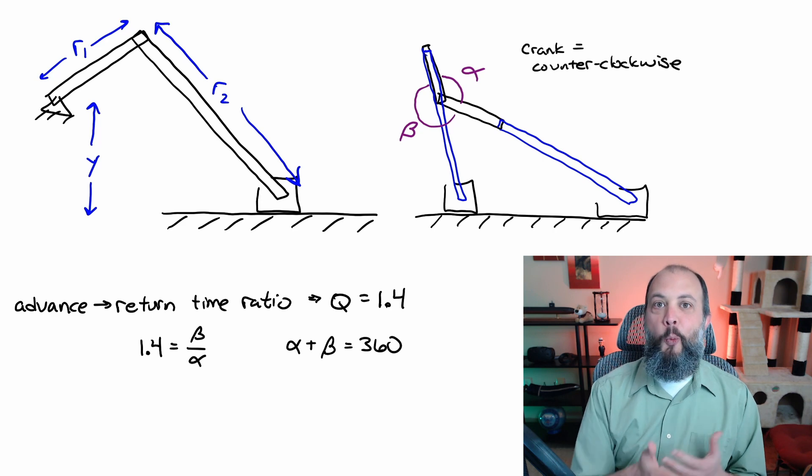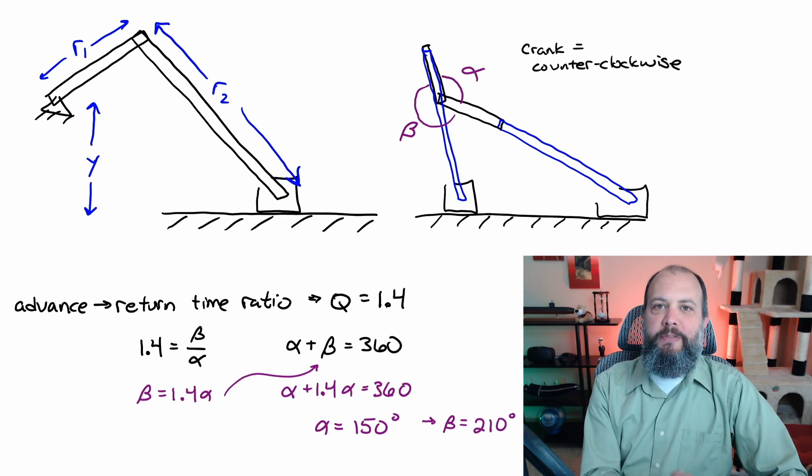And what we know about these angles alpha and beta is that they have to add up to 360 degrees and the ratio between them is going to be 1.4, that's the desired time ratio. A little algebra lets you find that you get an angle of alpha equals 150 degrees.